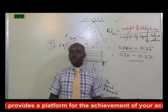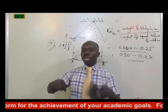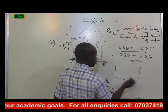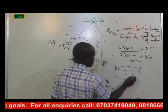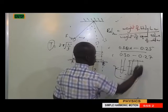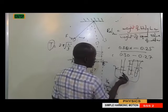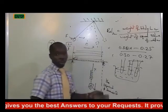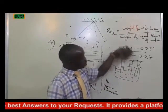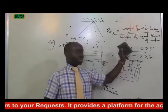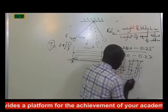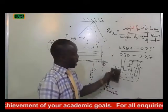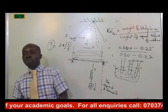Another body that undergoes simple harmonic motion is a loaded test tube. You have a container filled with water or any liquid. A test tube with some added weight is sunk into it. Ideally, the test tube tends to float, but if you can have it balanced vertically, the balancing of that test tube is not static — it oscillates vertically. That is also an experience of simple harmonic motion.